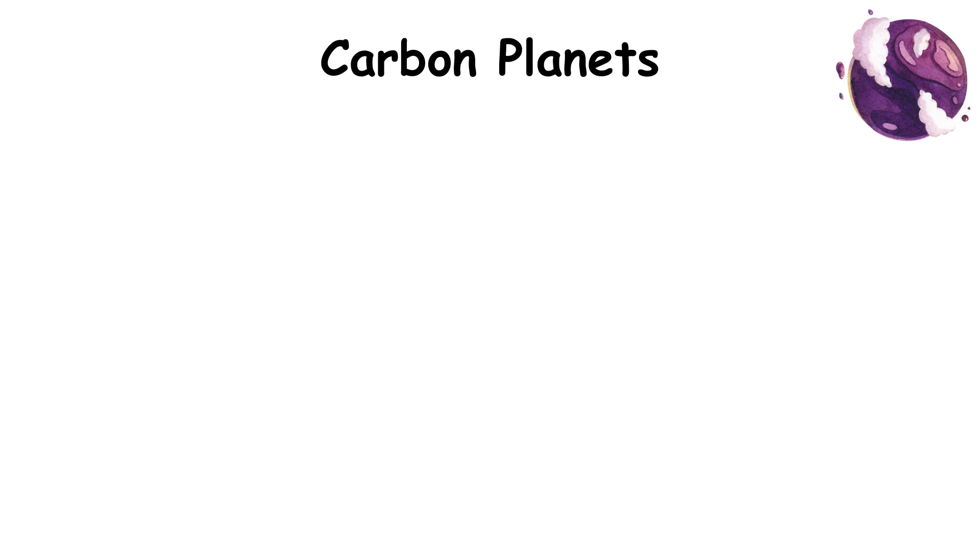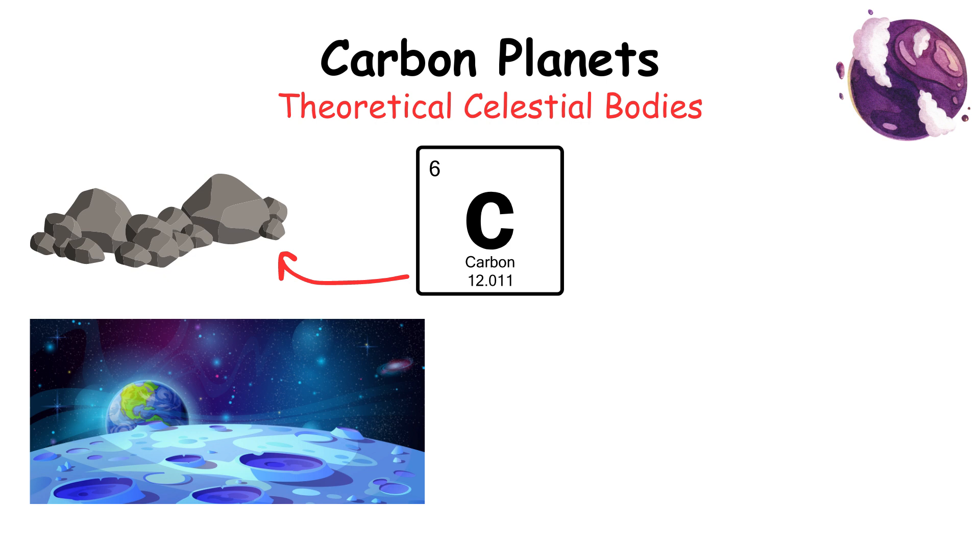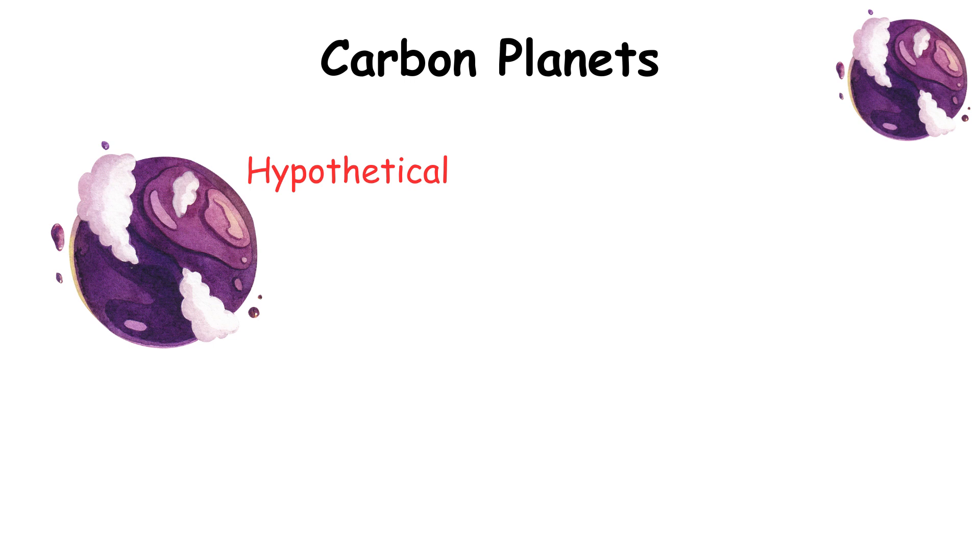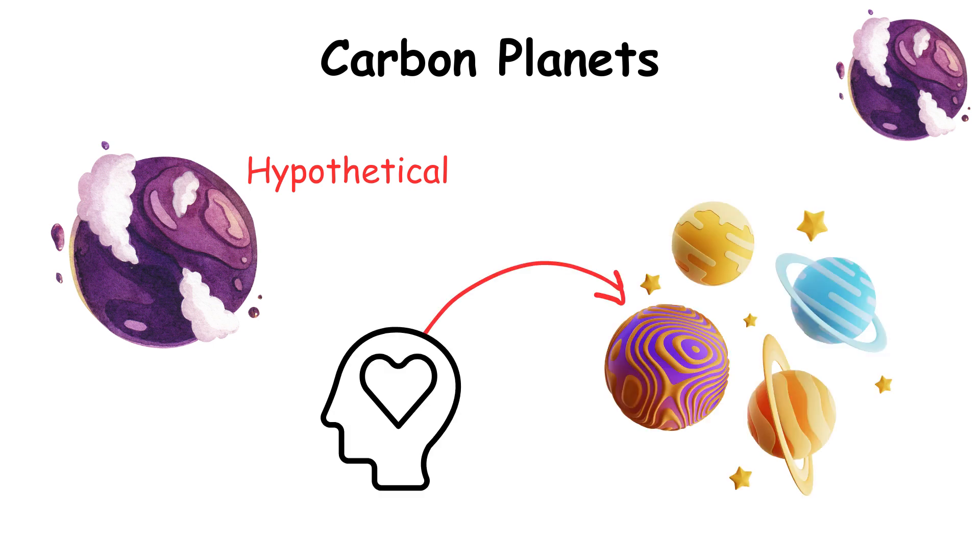Carbon planets are theoretical celestial bodies where carbon is the primary component of their rocks. They may have surfaces made of graphite or diamond with atmospheres rich in carbon dioxide. These planets are hypothetical but are of interest in astrobiology.